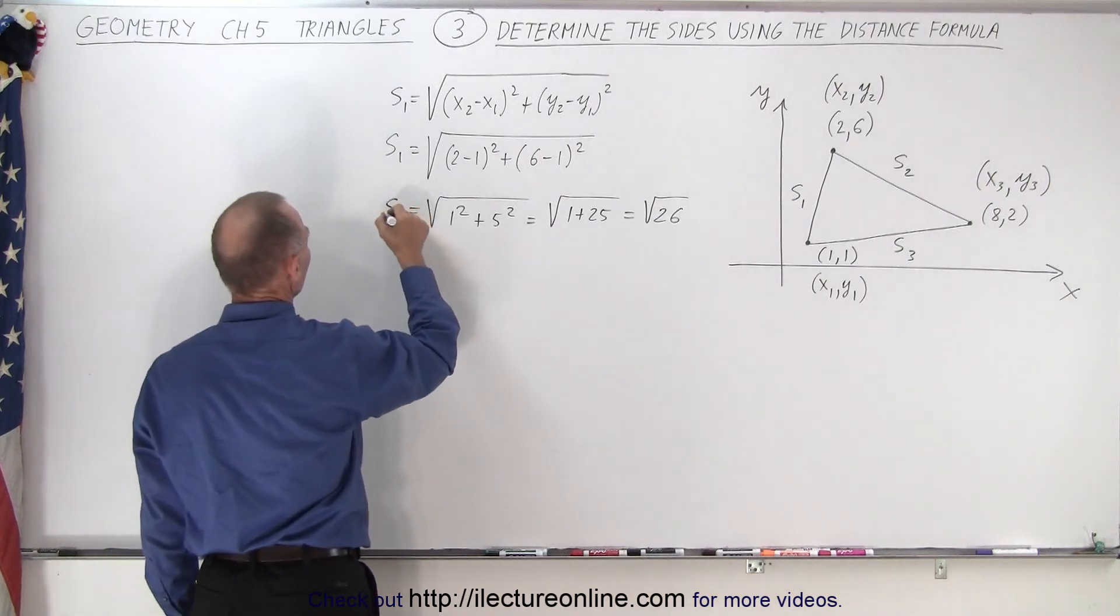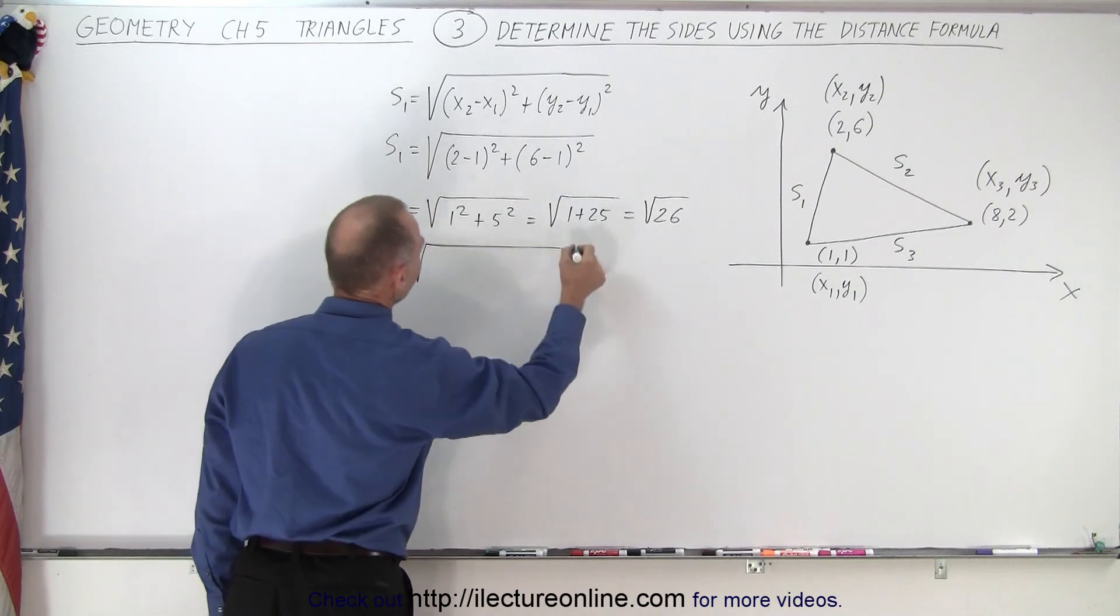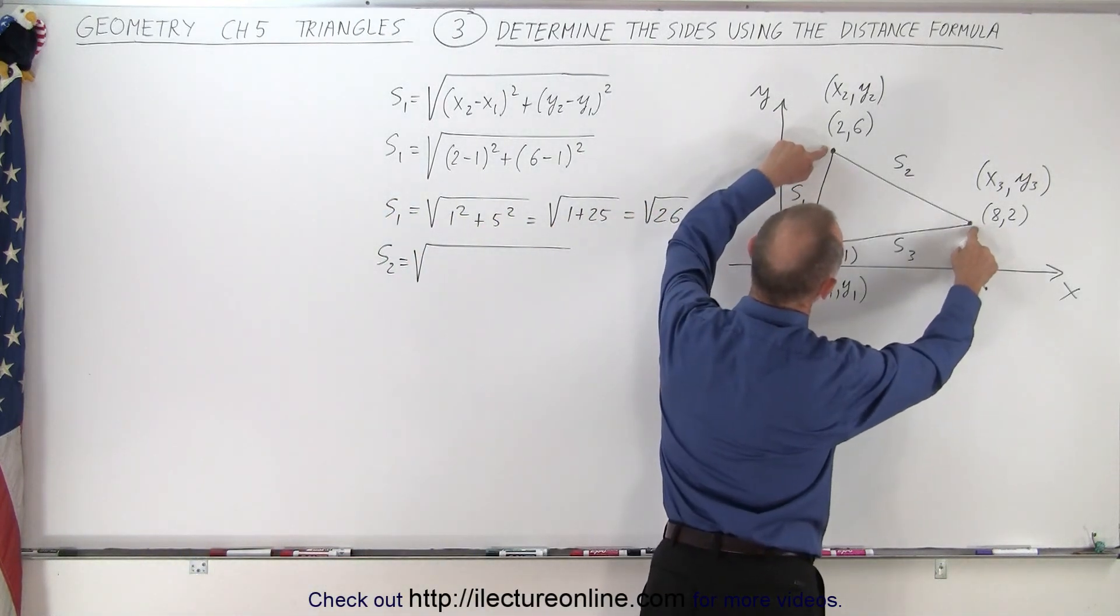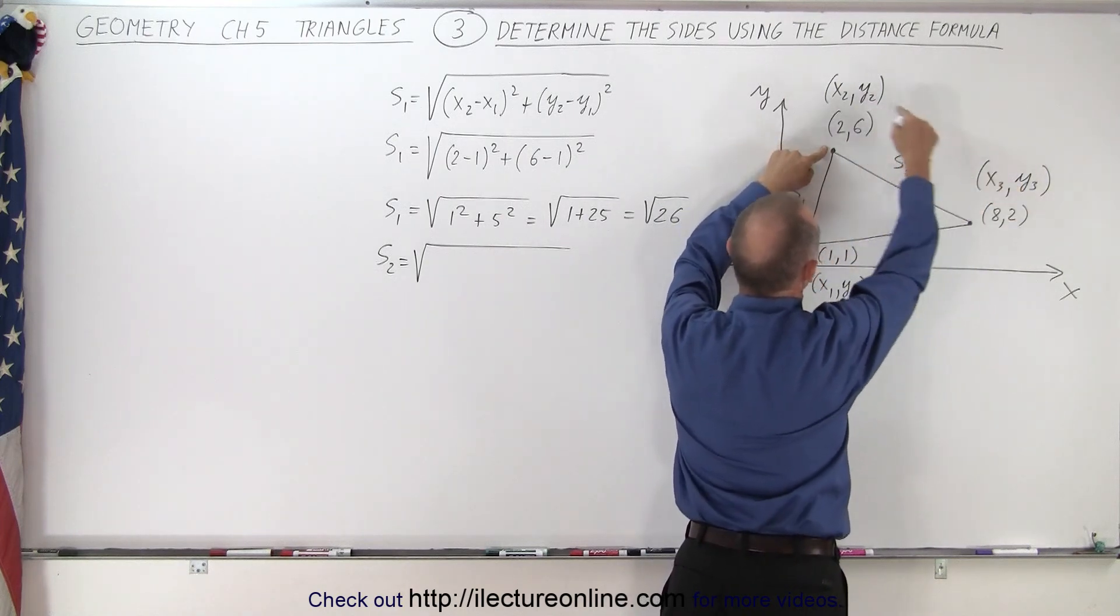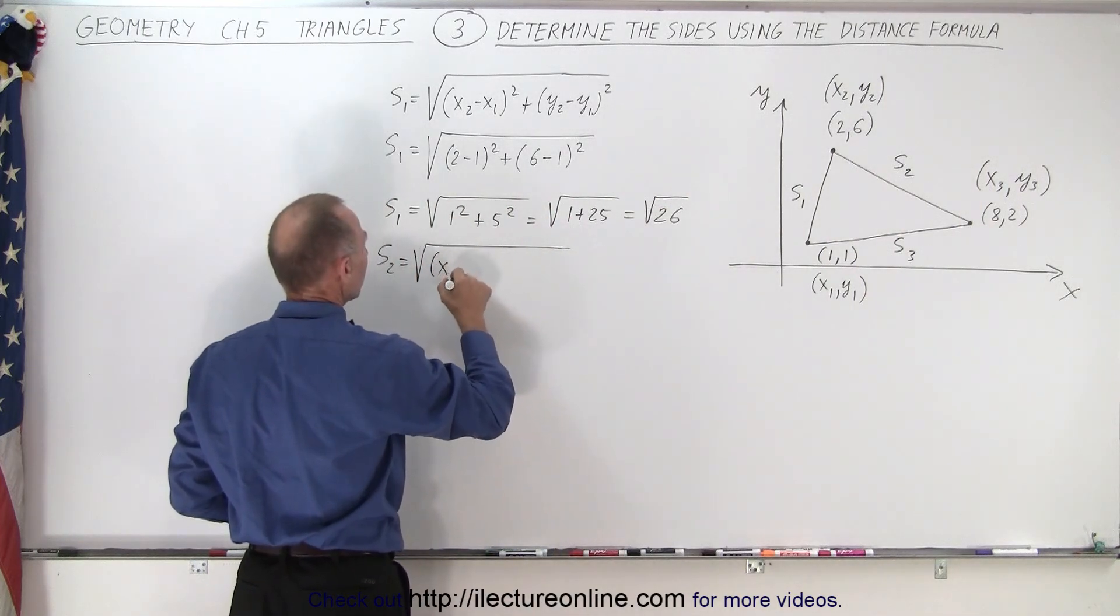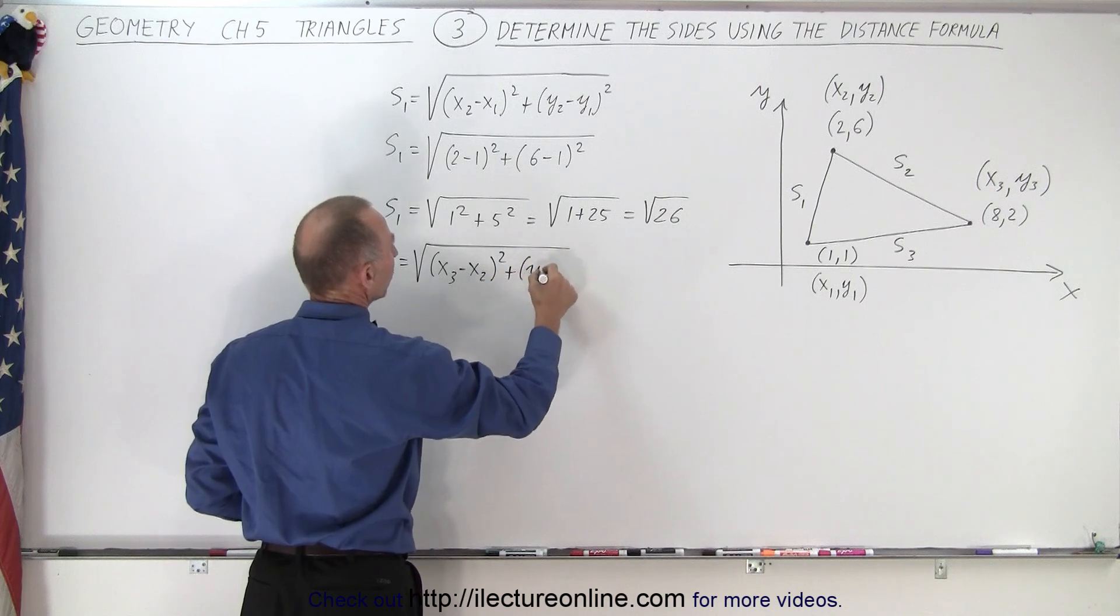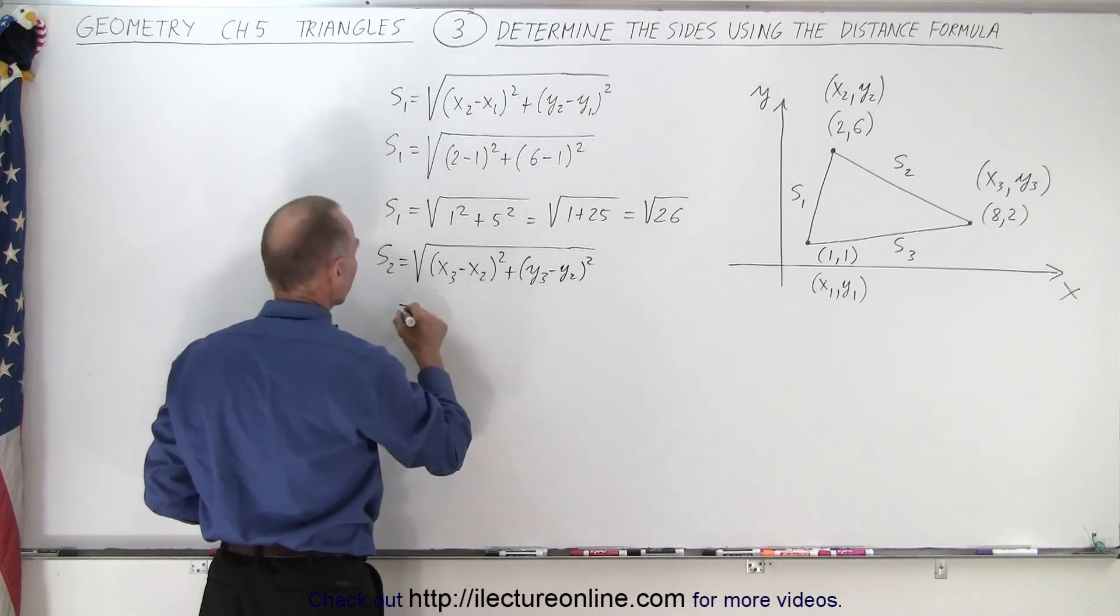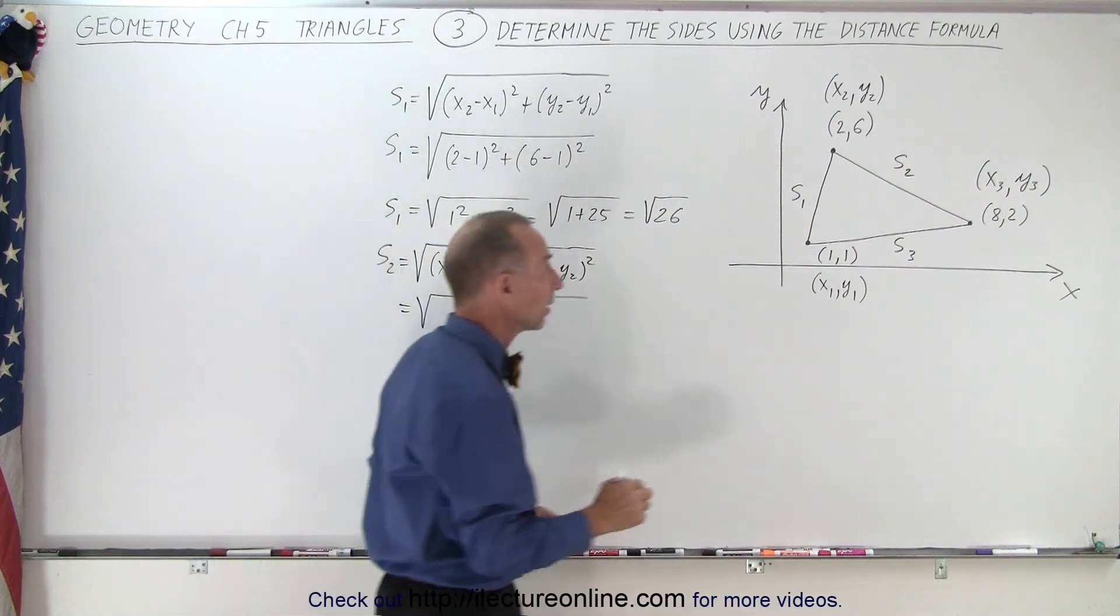We'll do the same for S2. S2 is equal to the square root of—now taking a look, that would be these two points right here, those are the endpoints—so we can take x3 minus x2 and y3 minus y2, and we square those. So we have (x3 minus x2) squared plus (y3 minus y2) squared.